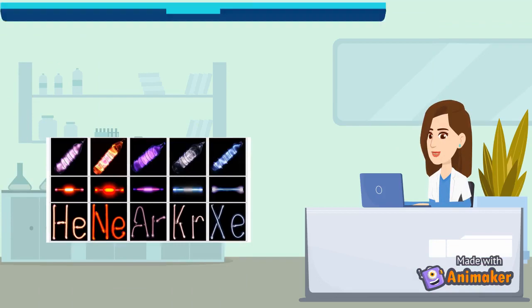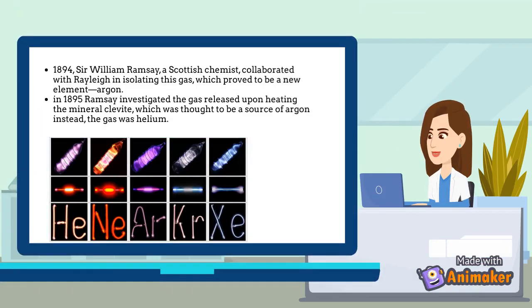Lord Rayleigh, an English physicist, isolated from the air a gas that he thought was pure nitrogen. In 1894, Sir William Ramsay, a Scottish chemist, collaborated with Rayleigh in isolating this gas, which proved to be a new element, argon.